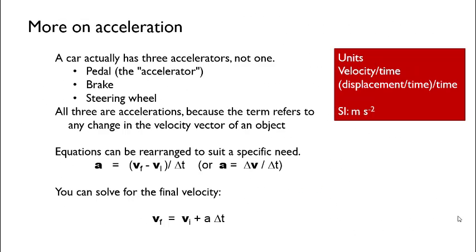Let's sum up some facts about acceleration that we've learned thus far. If we think carefully about acceleration, and maybe one of the common ways we experience it is in an automobile, there are really three accelerators in every car: the pedal, or what is known as the accelerator; the brake because decelerations or negative accelerations are also accelerations; and the steering wheel because a change in direction is also an acceleration. All three are accelerations because the term refers to any change in the velocity vector of an object.